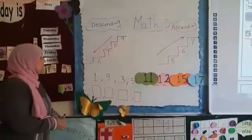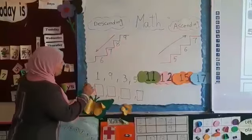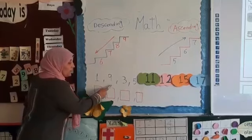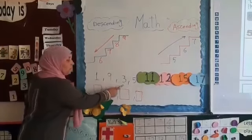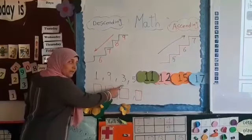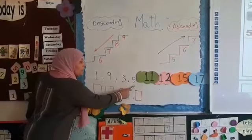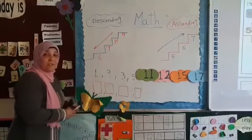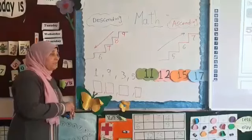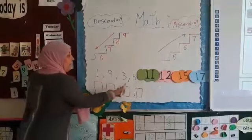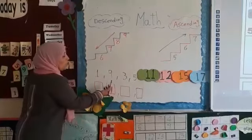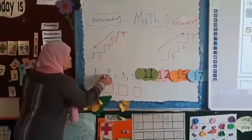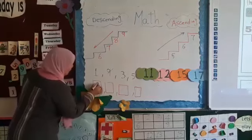Okay KG2, let's practice. What's this number? One. Excellent. And what is this? Nine. Yes. Three. And five. Okay, can you tell me which is the biggest number here? Nine? Yes, excellent.